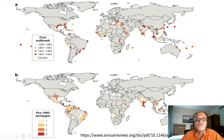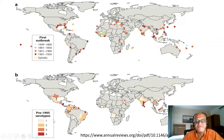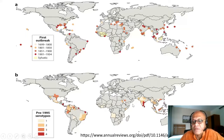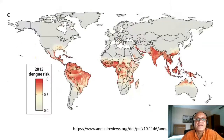Looking at pre-1995 serotype distributions, the four serotypes DENV-1 through DENV-4 are shown geographically. A country like India has all four serotypes, whereas the Texas region has only serotype three. This means we also have to consider how climate would affect each serotype individually.